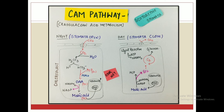The CAM pathway and the C4 cycle pathway are almost similar with only a few differences. The key difference is the scotoactive stomata — stomata are open at night and closed during the daytime. During the night, carbon dioxide enters via the open stomata and, in the same manner as the C4 pathway, reacts with water to form H₂CO₃, which splits into bicarbonate ions. These bicarbonate ions combine with PEP to form oxaloacetic acid.